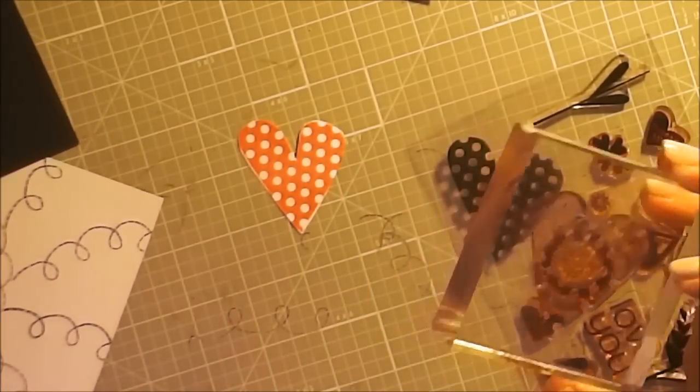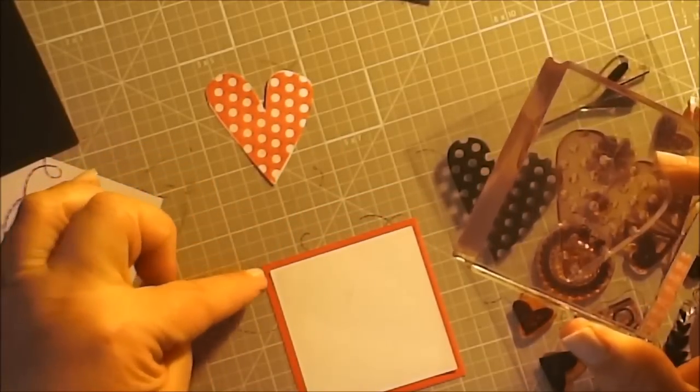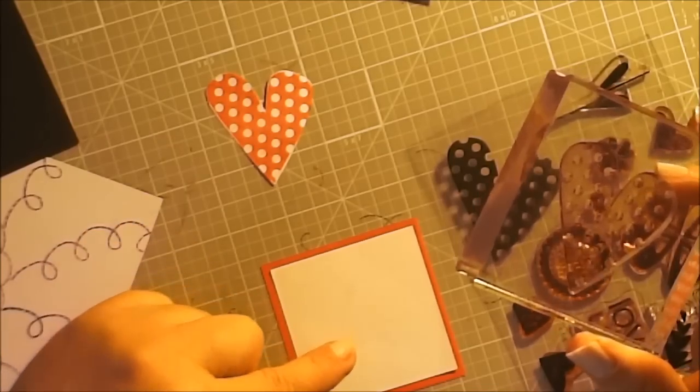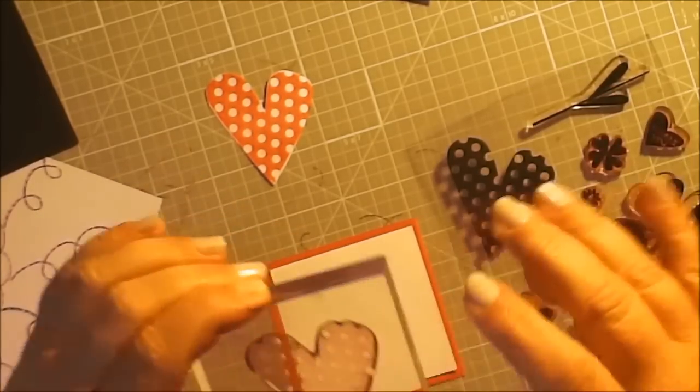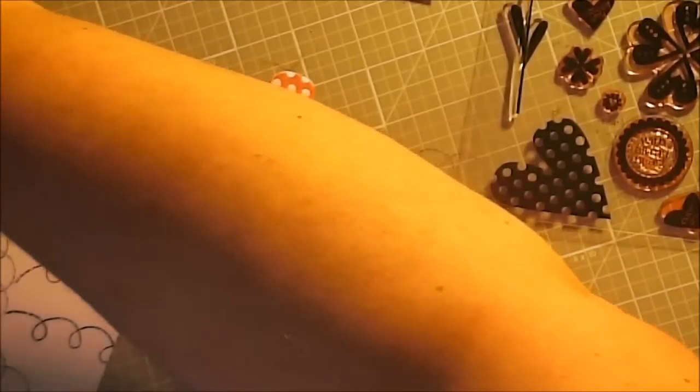I'm also going to stamp it on this piece I have here, which is a square that's two and three quarters on the red, two and three quarter by two and three quarter on the red, and two and a half by two and a half on the white. I'm going to stamp that in black, a black polka dot heart.